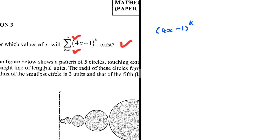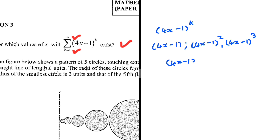We have 4x minus 1 to the power k. The first term, when you substitute k equals 1, gives us 4x minus 1, so that is a. When you substitute k equals 2, we get (4x minus 1) squared, and then (4x minus 1) cubed, and so on. The common ratio is 4x minus 1, since dividing (4x-1)² by (4x-1) gives 4x minus 1.